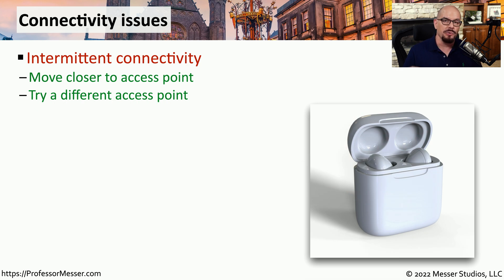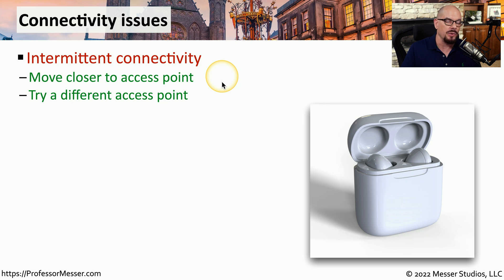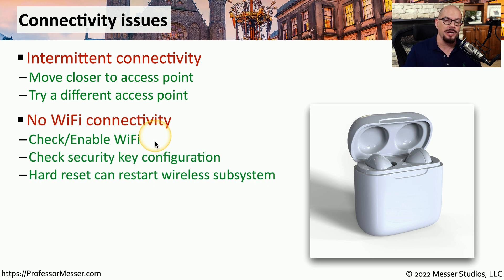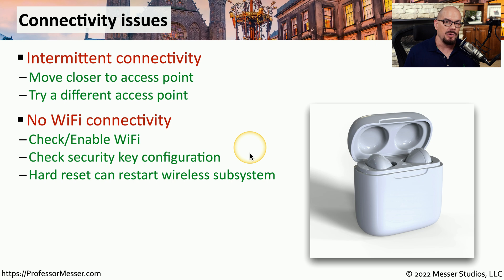These are mobile devices, so it's very possible to take our device outside the range of a particular signal. There may be times when you're in a building or location where you will occasionally have connectivity and other times have no connectivity. If this is happening with an 802.11 wireless network, you may want to try moving closer to an available access point or try connecting to a completely different access point. If you're getting no connectivity at all, check the Wi-Fi settings and make sure Wi-Fi functionality is enabled, confirm you are connected to that Wi-Fi network and have provided the proper security key. And occasionally resetting your device can resolve this particular connectivity problem.